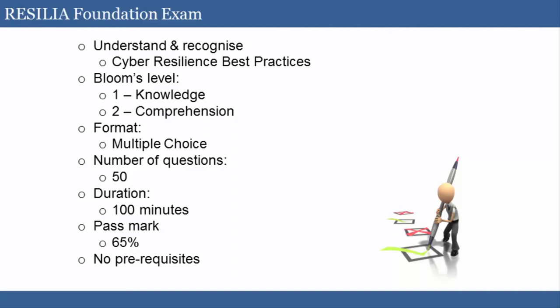The key learning objectives highlight the key ideas in the syllabus that are going to be tested on the exam. They also reflect the key activities that we're going to want to engage in to build a more cyber resilient organization. The examination itself is a multiple choice set of questions. You'll have 50 questions on the test and you have to get 33 of those correct in order to pass — that's 65%, though you need 66 to pass. There are no prerequisites to this course, so it's intended for anyone who wants to be part of a cyber resilient organization, which would mean just about all of us.